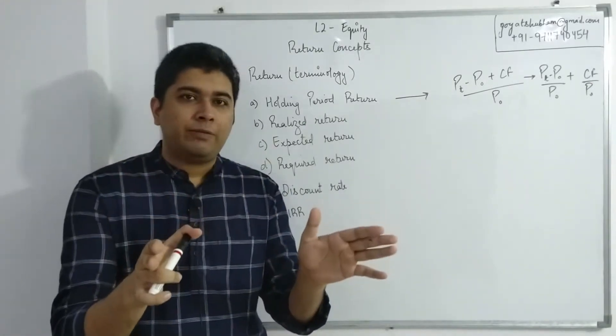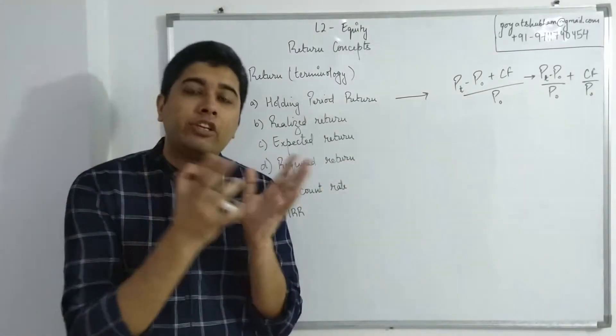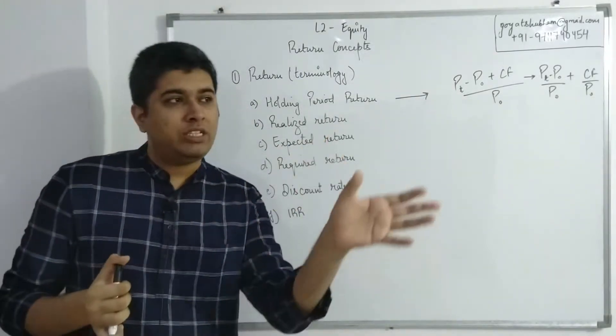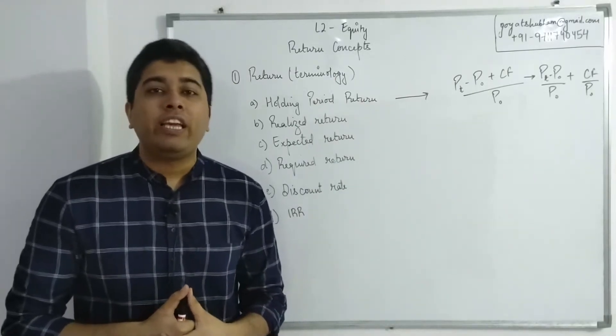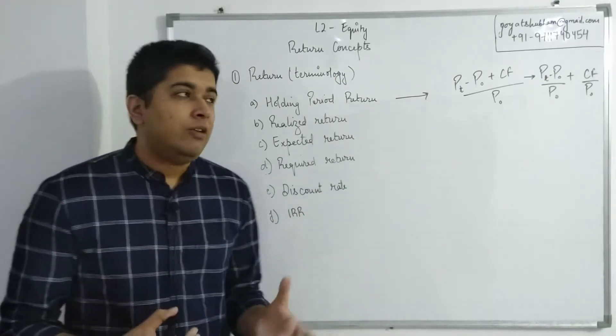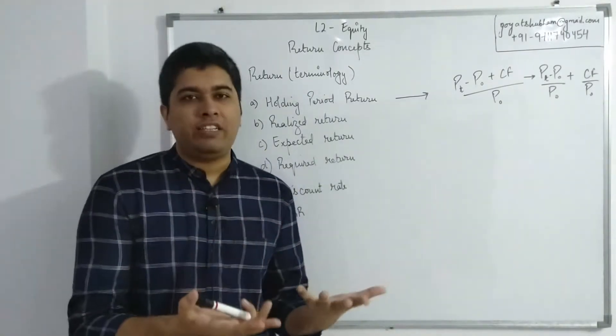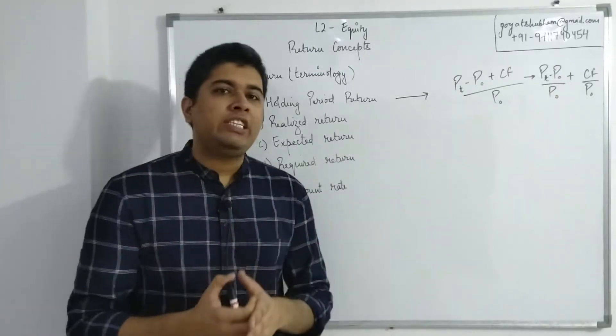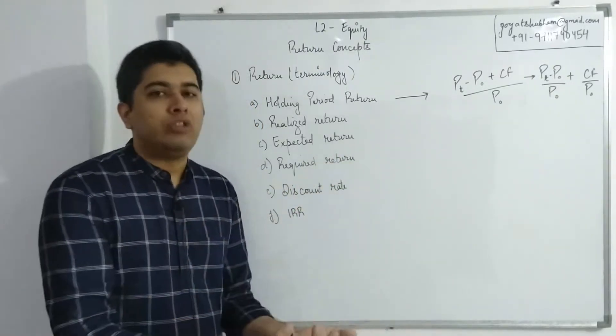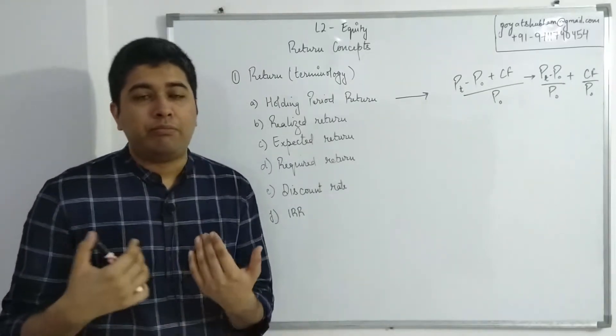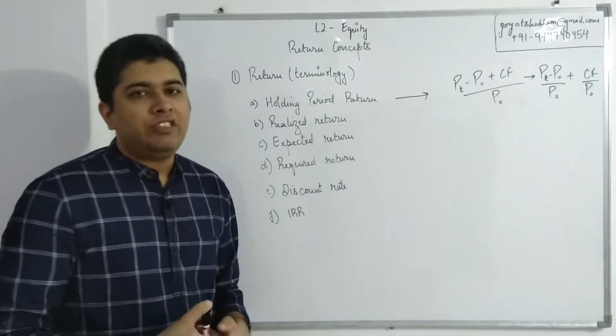Required return is a concept looking from the perspective of the investor, whereas expected return is looking at the security - how much will that security probably increase or probably give us in terms of gains. Required is how much return does the investor need to keep him satisfied. The perspective is changing but both of them are looking at some sort of returns in the future. They are not a backward looking process, rather they are both forward looking, but the perspective is changed - one is from the investor's perspective, the other is from the security perspective.